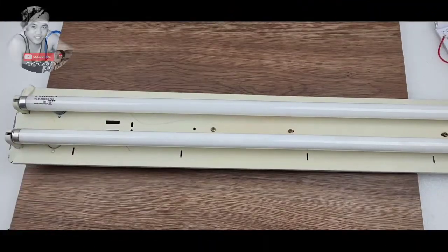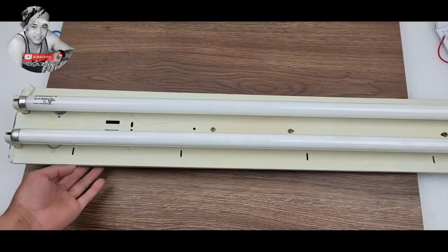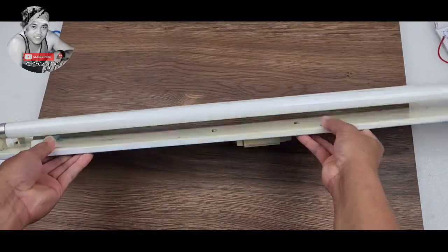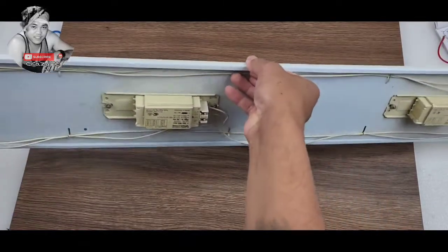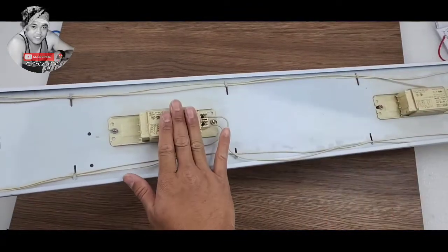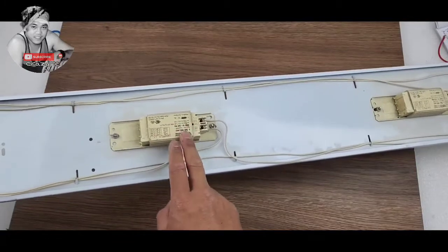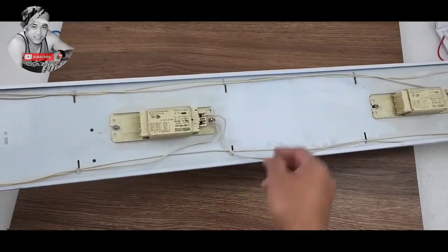Hello ma'am sir, for today's video I will teach you how to rectify this damaged light. Before it was a ballast type which is now gone already because it's too old, so it's damaged. It's a 220 volts AC ballast or choke.